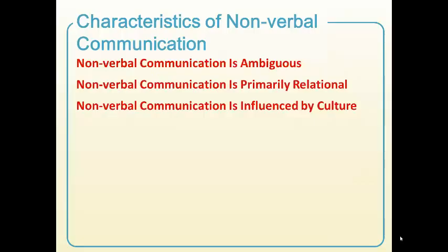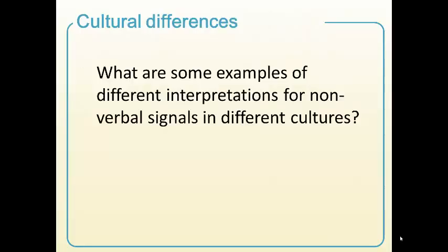Nonverbal communication is ambiguous, meaning unclear, primarily relational, and influenced by culture. Think of all the potential for misunderstanding. For example, the OK signal we make with our fingers doesn't mean the same thing in other countries as it does in ours. What other examples can you think of?